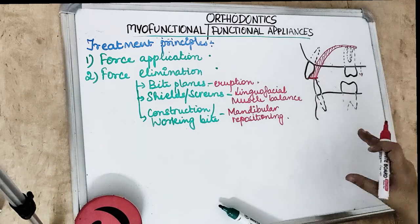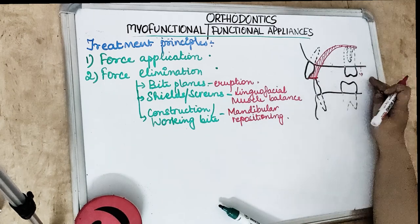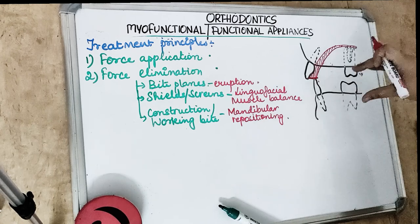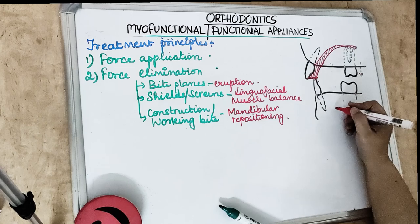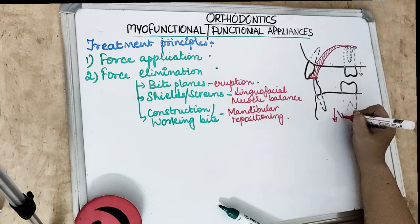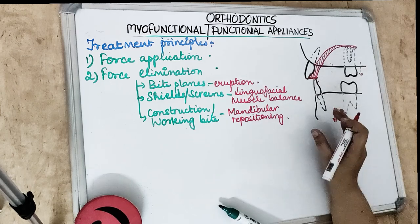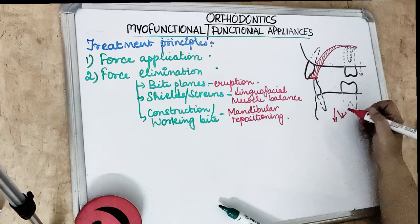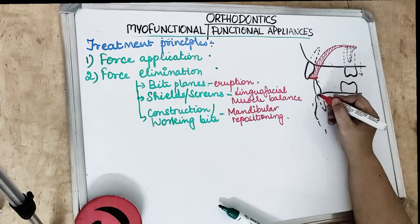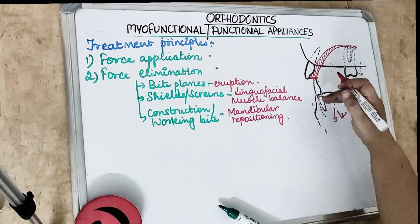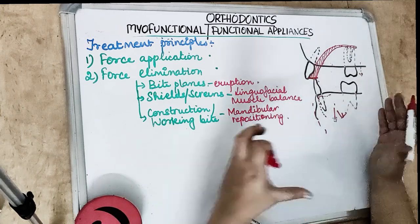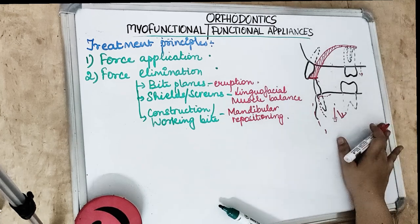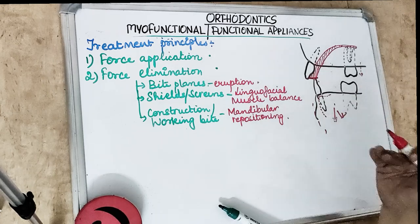Posterior teeth eruption results in downward and backward rotation of the mandible. When the posterior teeth start erupting after disocclusion, the mandible goes in a downward and slightly backward direction. This increases the lower facial height and reduces prognathism — so if there is a prognathic mandible, it is being brought back. This concept is used in treating the prognathic mandible.